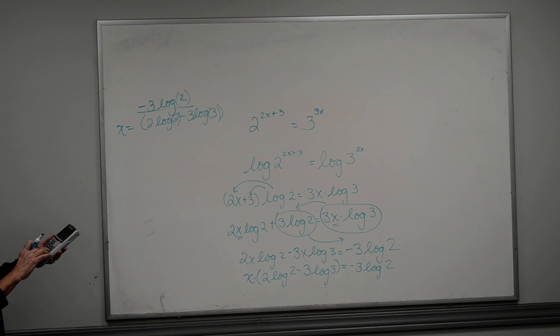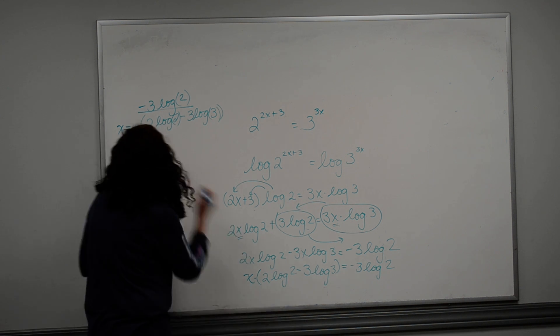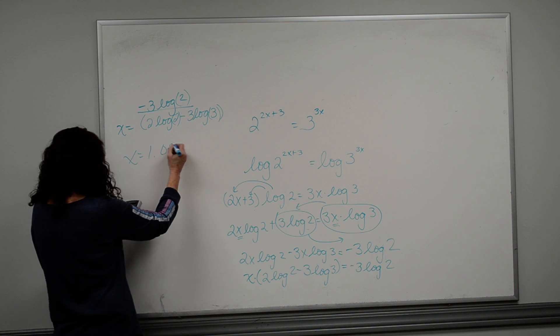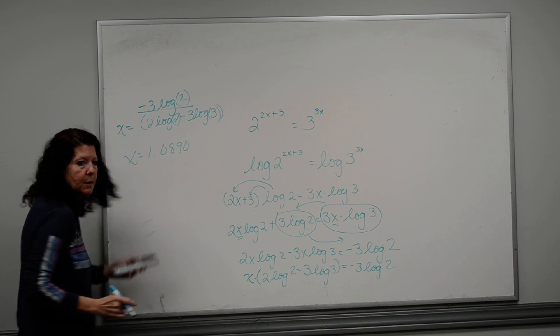So I'm going to get the log of 2, close the parentheses, divided by 2 times the log of 2, minus 3 times the log of 3, and you should get x is equal to 1.0889.